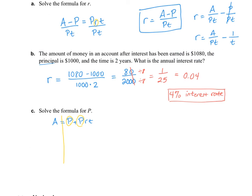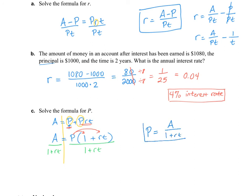Part C asks us to solve the formula for P. P appears in two spots and we can't combine those terms, so we use the opposite of the distributive property and factor out P. That gives A equals P times the quantity 1 plus RT, because P times 1 is P and P times RT is PRT. Now we divide by 1 plus RT on both sides, and our final answer is P equals A over 1 plus RT.